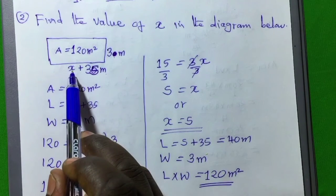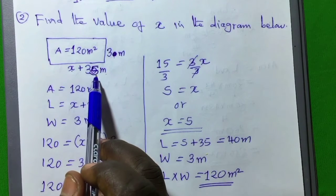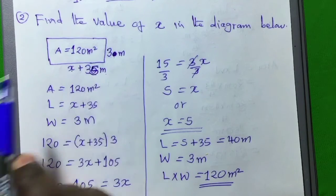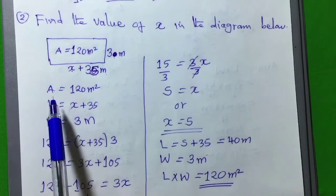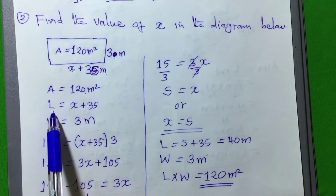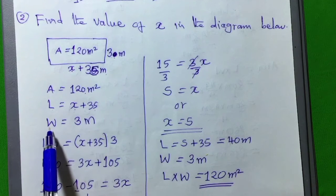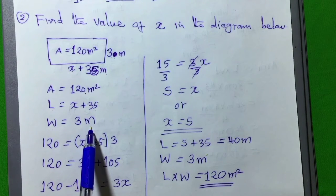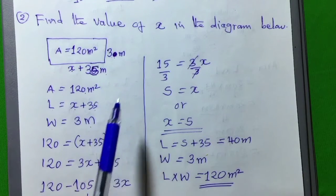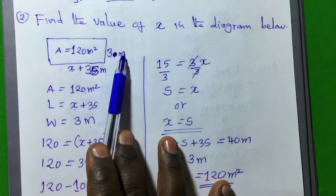Now, we are supposed to find this value x which we don't know. The length of the rectangle x added by 35, multiplied by this one, we will get 120. Let's now say the value of A is equal to 120 meters squared, the value of L is x plus 35, and the value of W is 3 meters.